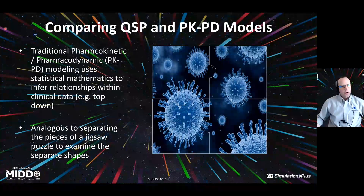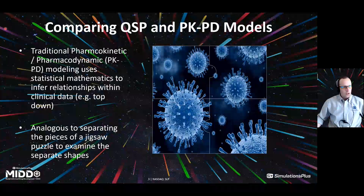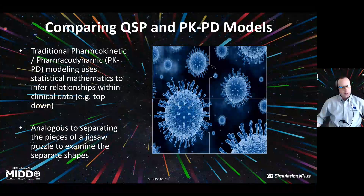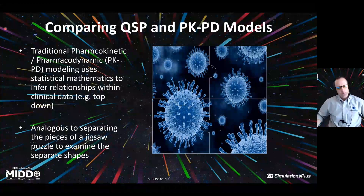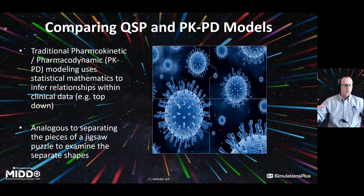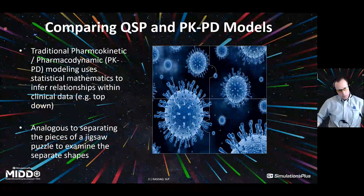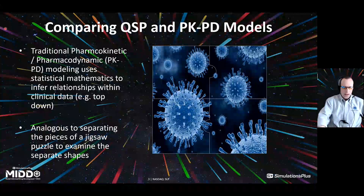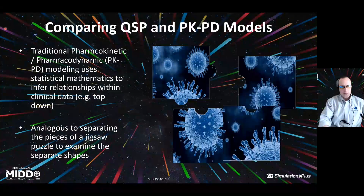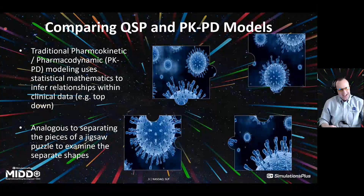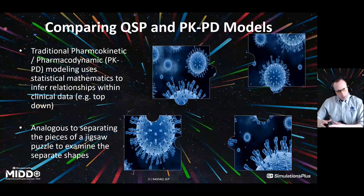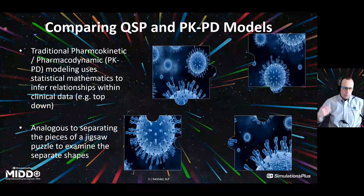Let's quickly compare quantitative systems pharmacology, or toxicology modeling and simulation, with pharmacokinetic pharmacodynamic — PKPD — modeling and simulation. Traditional PKPD modeling typically uses statistical mathematics to infer relationships from clinical data. Conceptually this can be thought of as a top-down approach, where you take a dataset with lots of information — in some cases fairly large clinical datasets — and use statistics and modeling approaches to piece apart that data and determine which aspects of that particular study or those patients was driving certain outcomes or effects, whether it be exposure, PD, or certain endpoints.